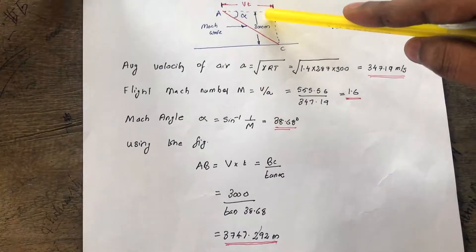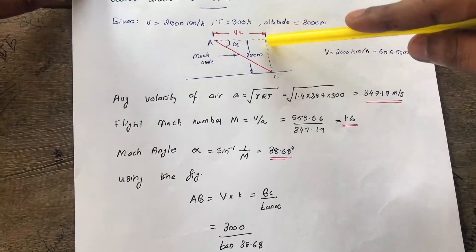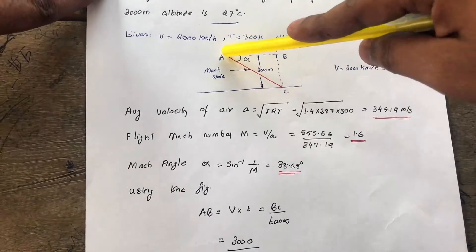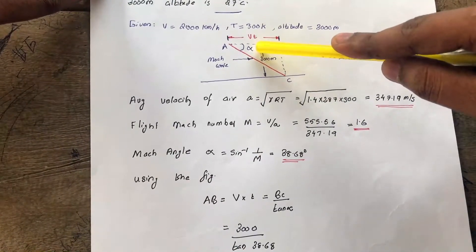In this diagram, we can find that there is an observation post. The flight is moving here, and the angle subtended is alpha. This angle is known as the Mach angle.